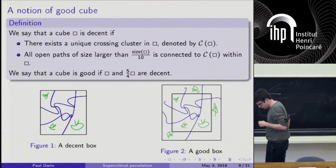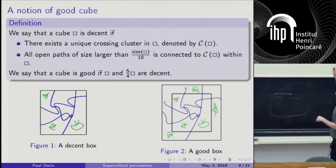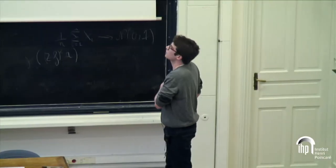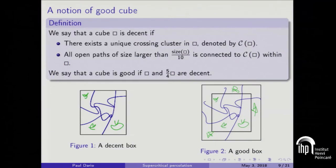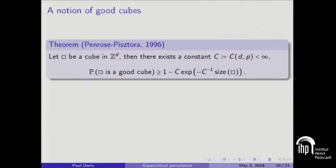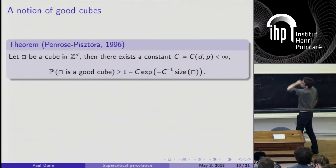I'll refine this notion, which will be useful for the tool I'll build in a few minutes. We say a cube is good if the cube and the 5/4-enlarged cube — same center, size multiplied by 5/4 — are both decent. The big result of Anton and Pistora in 1996 is that this notion of good cube is well-behaved: the probability of a cube being good is very close to 1 — in fact exponentially close to 1 — when the size is large.